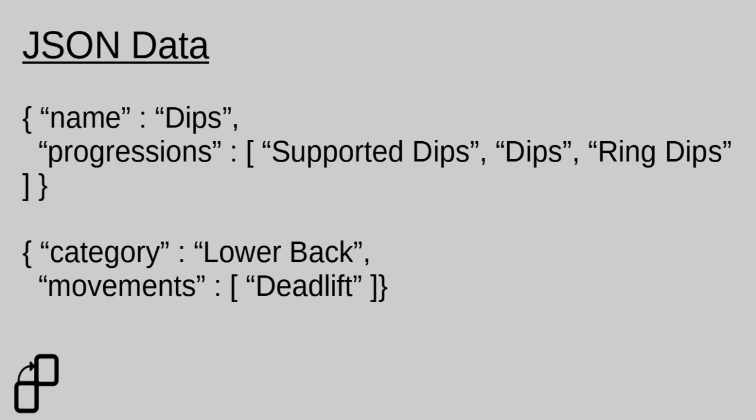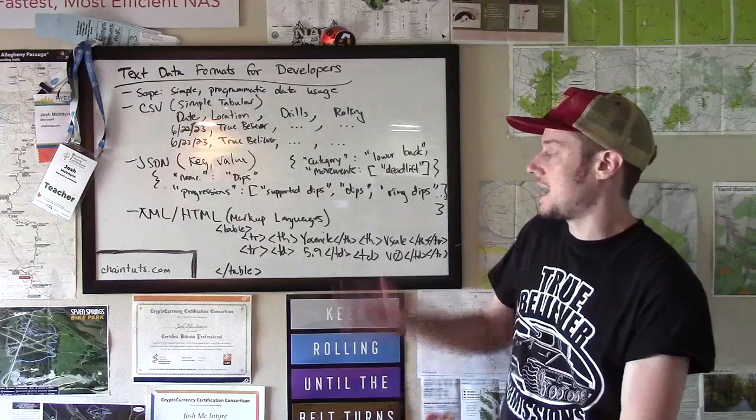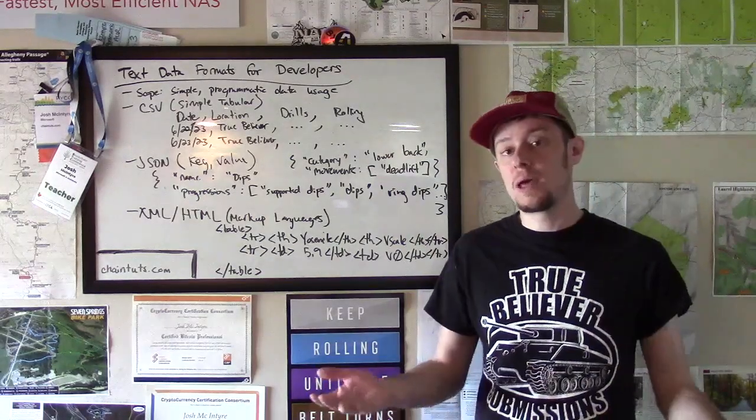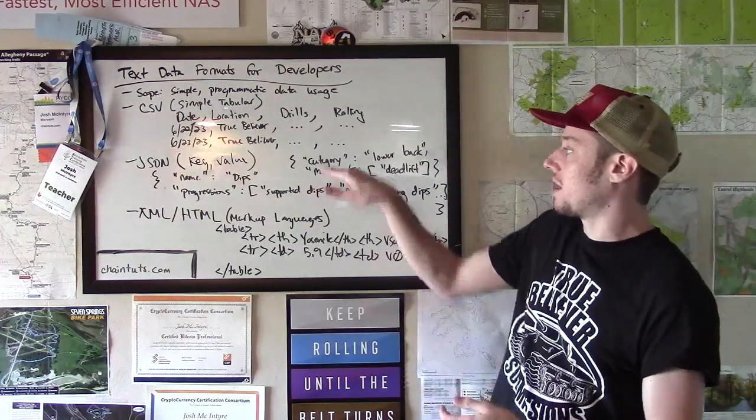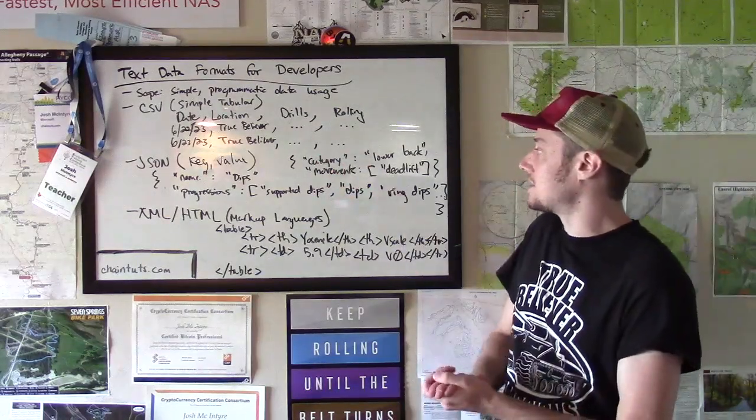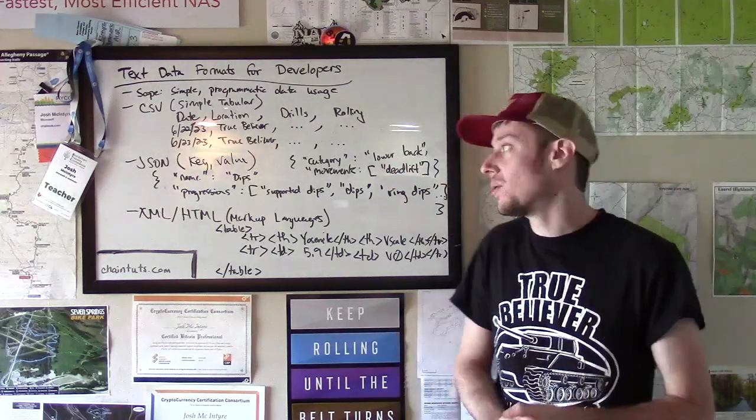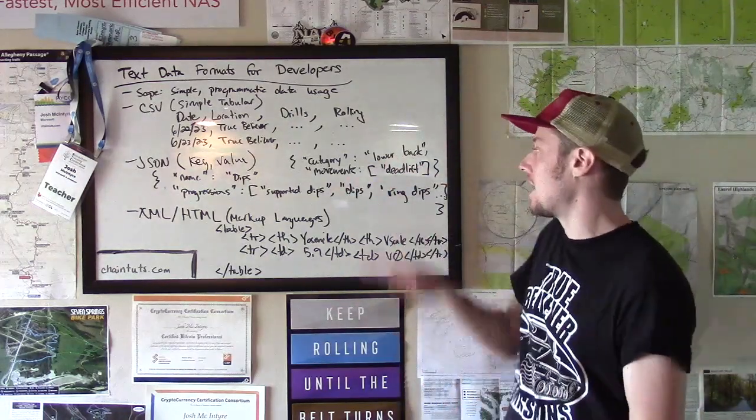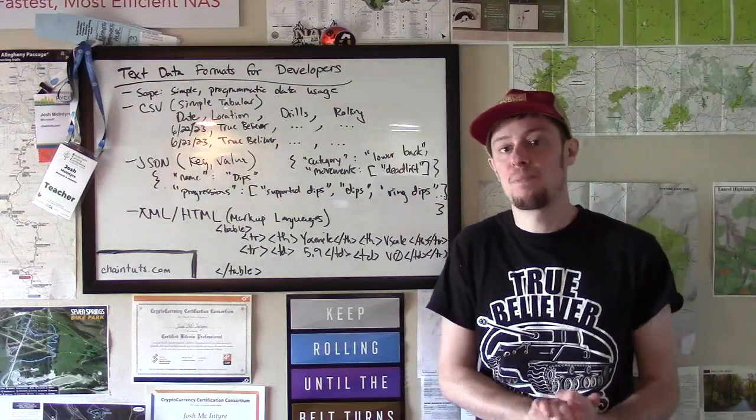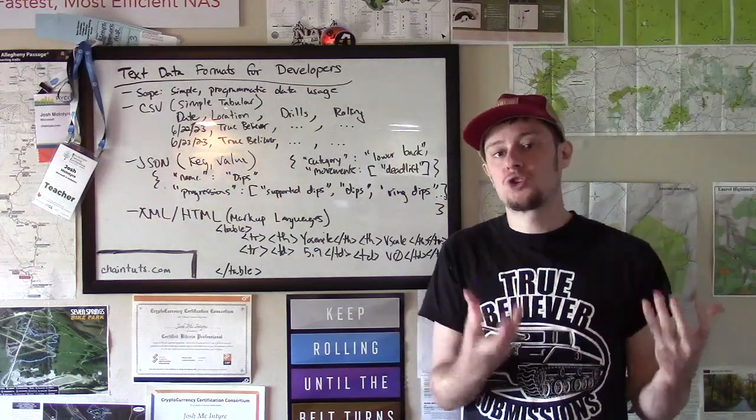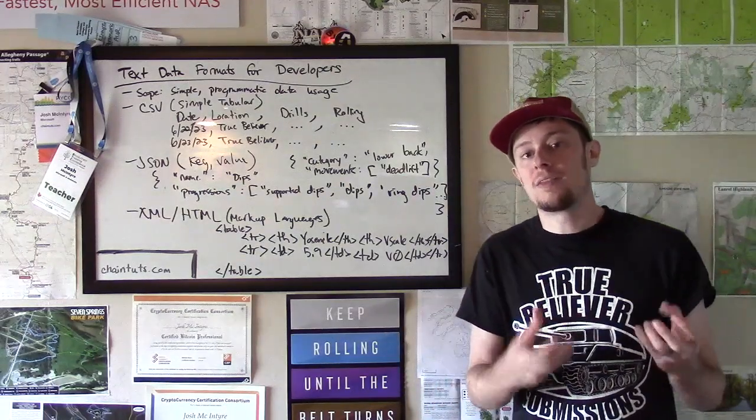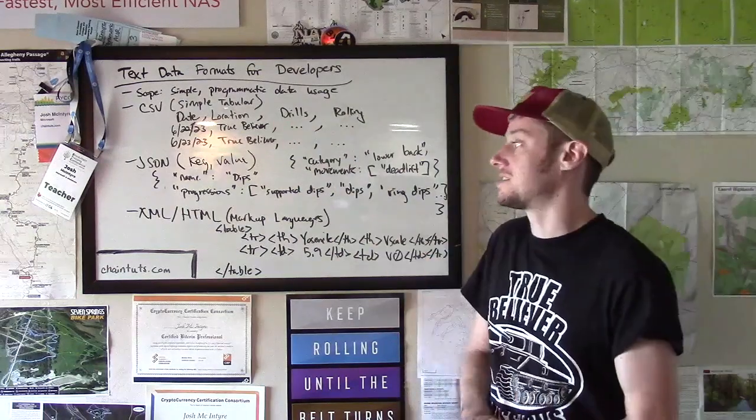Maybe we have another file in our resistance training program that contains barbell or free weight movements. We have something like the category as the key and lower back exercises as the value. And then we have movements and the deadlift for example. So we can structure our data in a way that's a little bit more complex than a simple table.